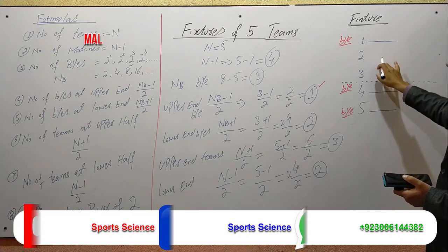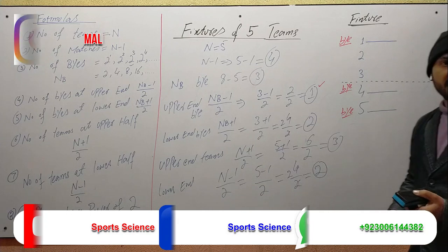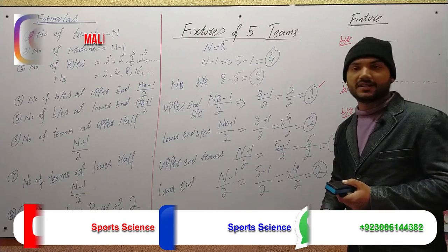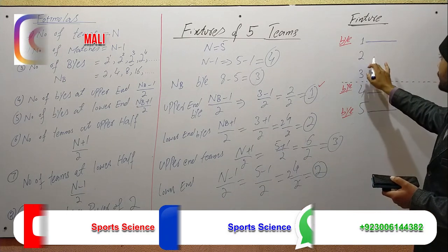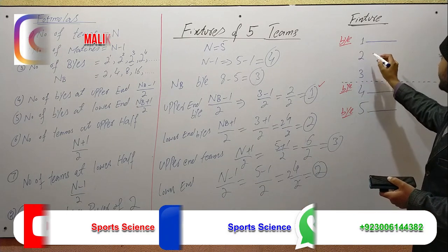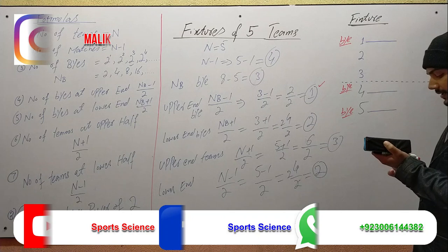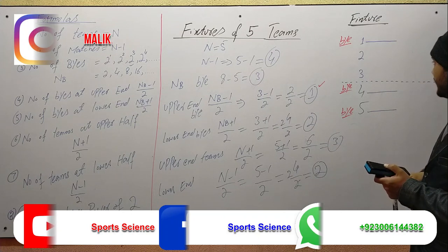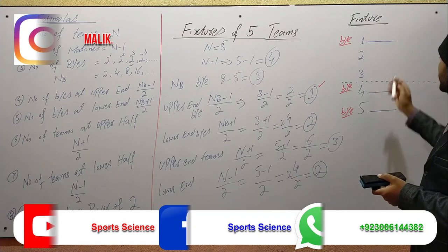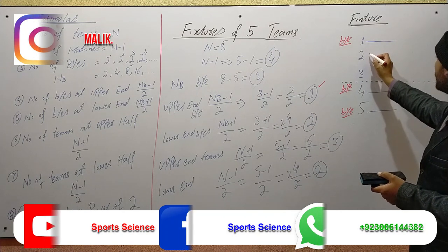The other teams that have to play a match will be matched together. The remaining teams are number 2 and number 3. Team number 2 and team number 3 will play against each other.